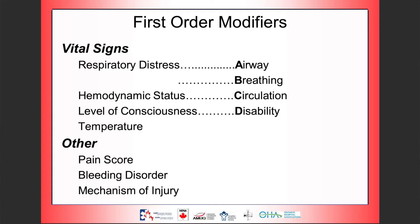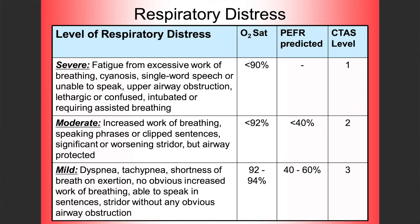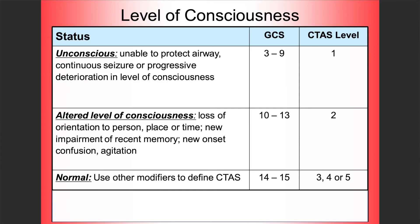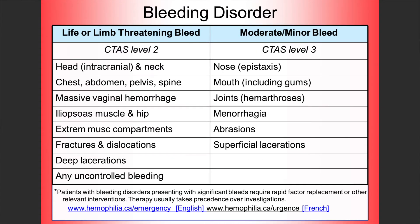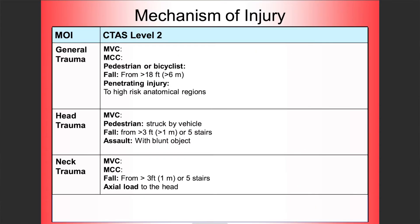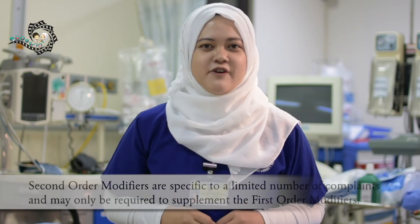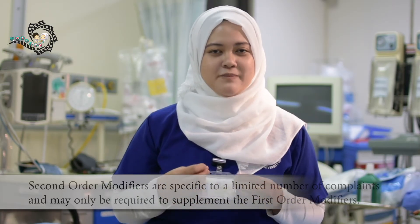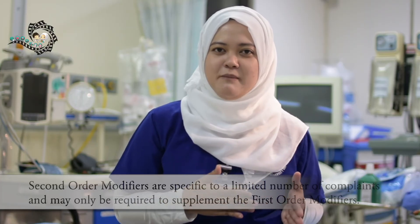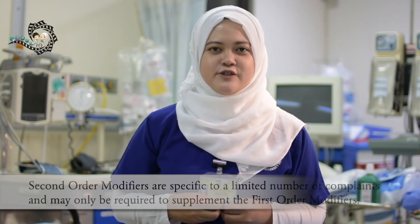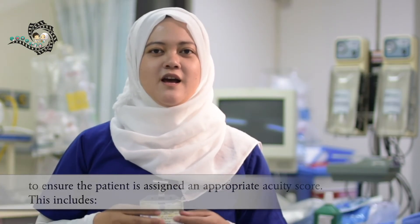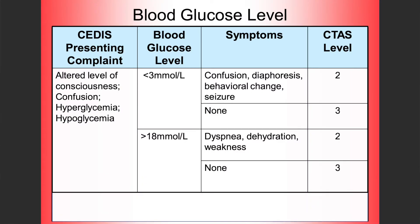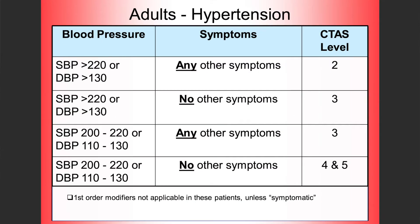First-order modifiers include respiratory distress, hemodynamic stability, level of consciousness, temperature, pain severity, bleeding disorder, and mechanism of injury. Second-order modifiers are limited to a specific number of complaints and may only be required to supplement the first-order modifiers, to ensure the patient is assigned an appropriate acuity score. These include blood glucose level, degree of dehydration, and degree of blood pressure or hypertension in adults.